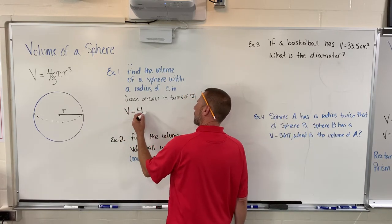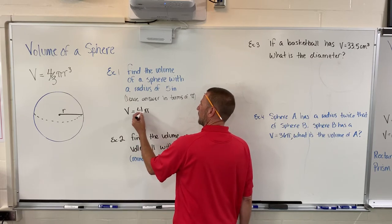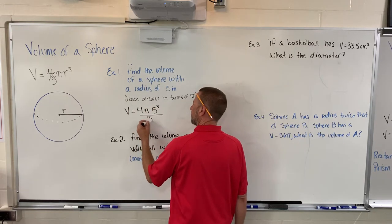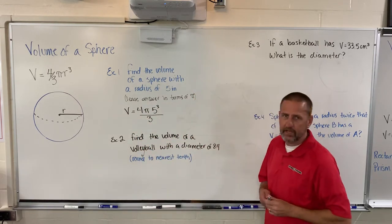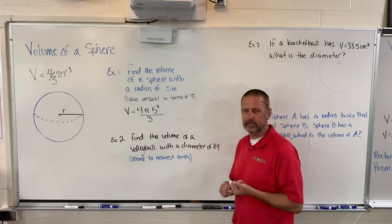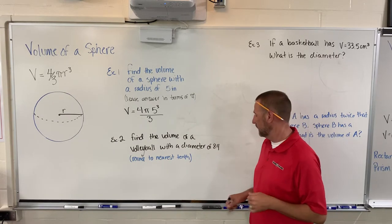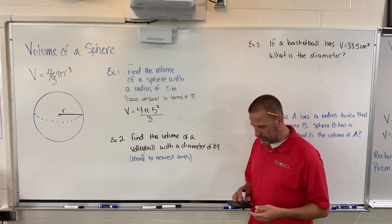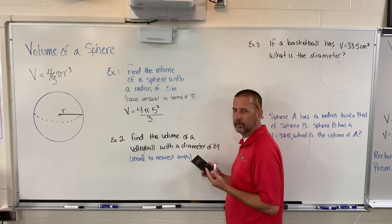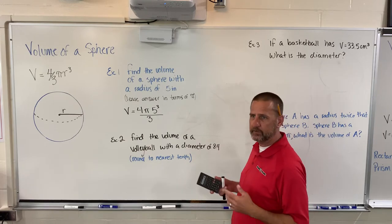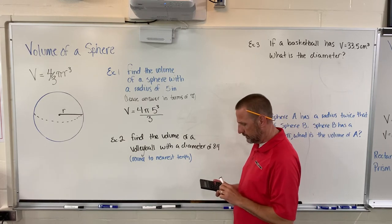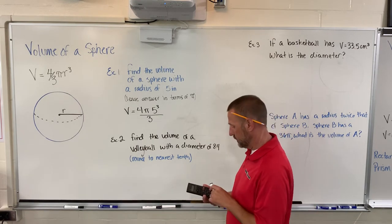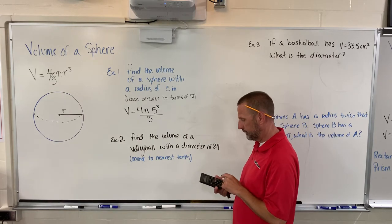We know it's 4 pi and then it's 5 cubed all over 3. When I work this out, we need to stick to order of operations which means we've got to take care of the cube. We've got to raise it to the third power. On our calculator we just go 5 times 5 times 5. That gives me 125, then we multiply that by 4, which gives me 500.